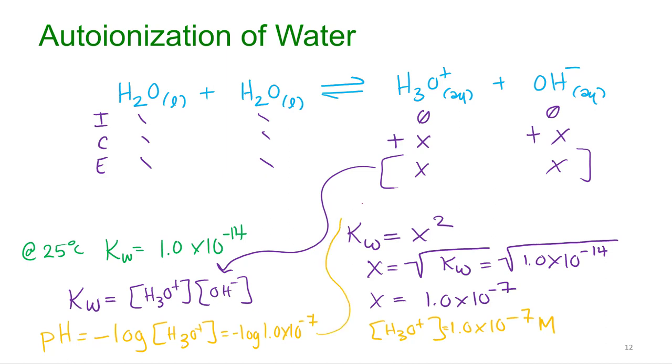What is the negative log of 1.0 times 10 to the negative seventh? I ran out of room. What is it? Seven. Yep, pH equals seven. That's what we said the pH of water was, right?